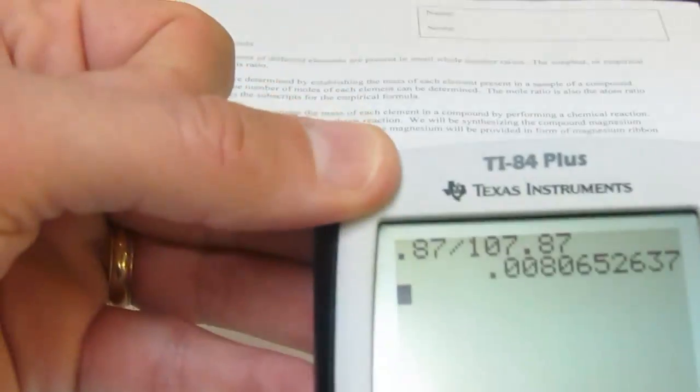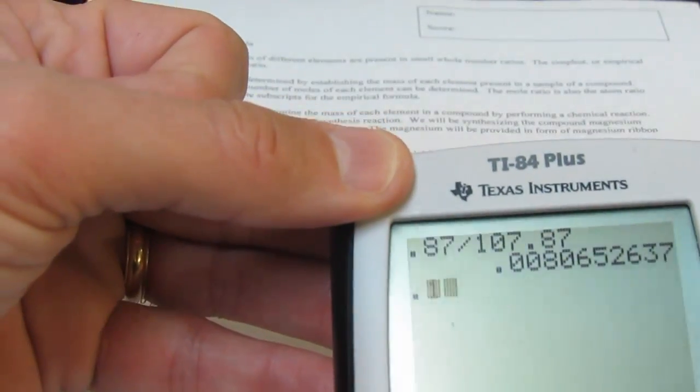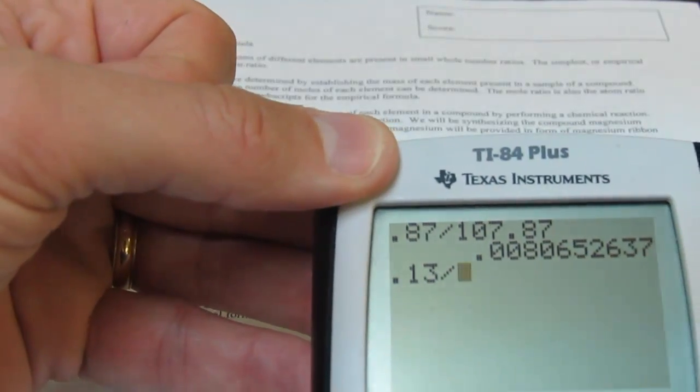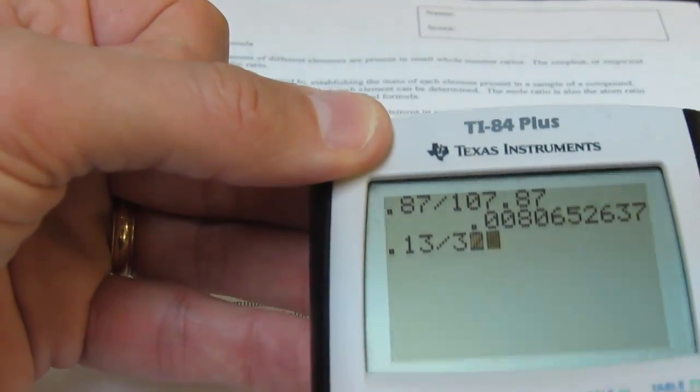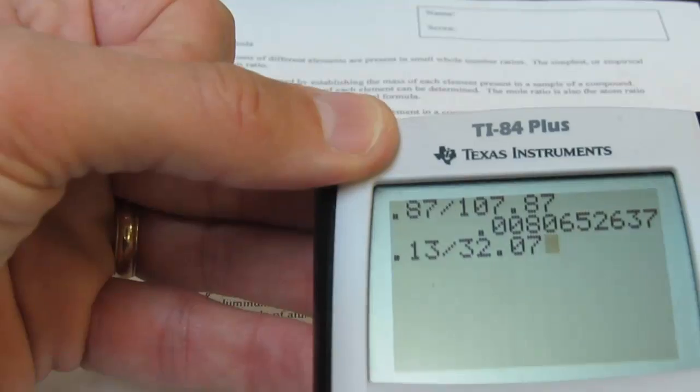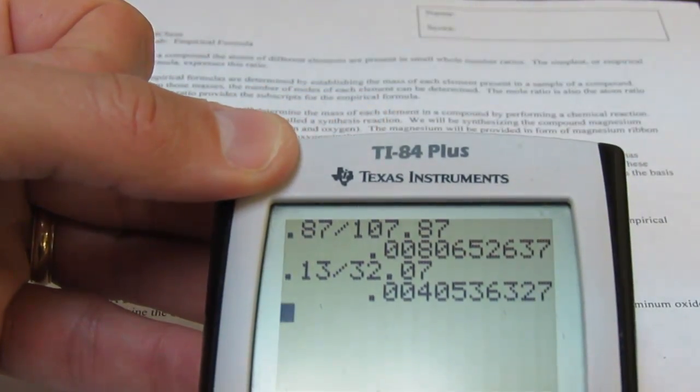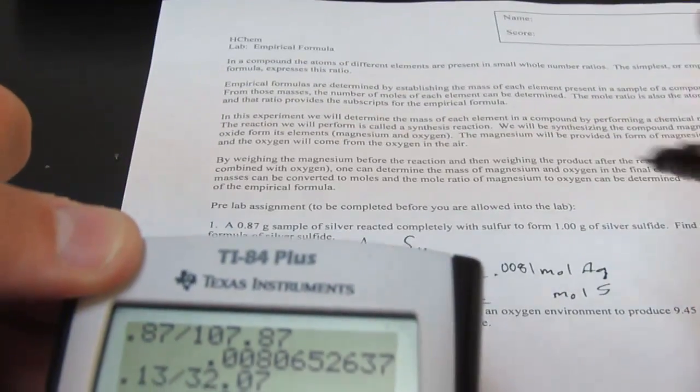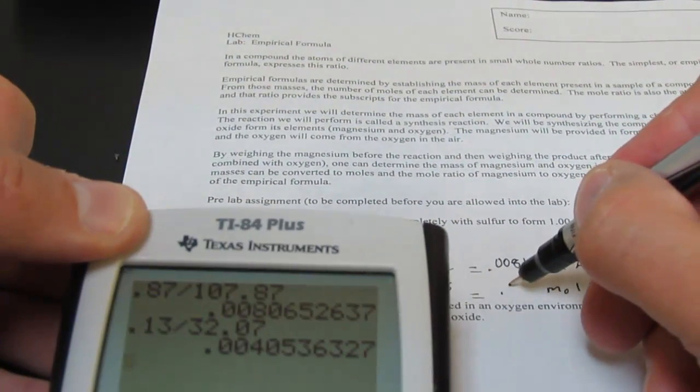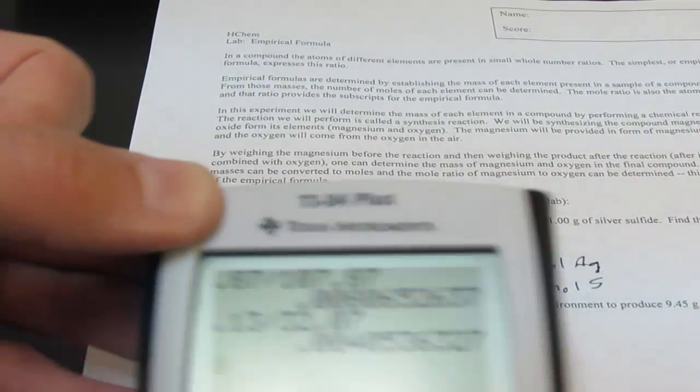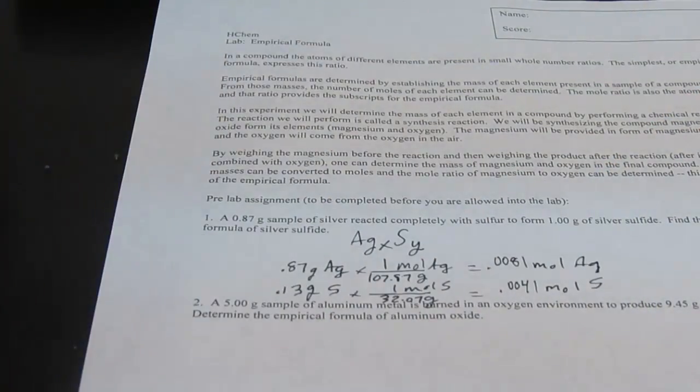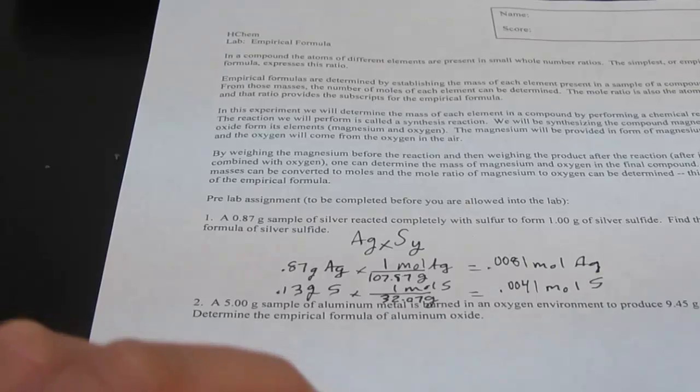Let's do the same with sulfur. 0.13 divided by 32.07, let's see what that gives us: 0.0041. Once again, we're only allowed two sig figs, so 0.0041 moles of sulfur were used in forming this compound.